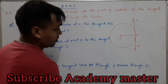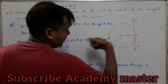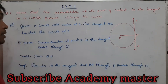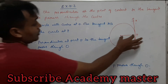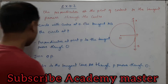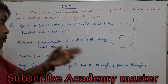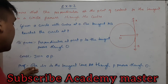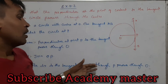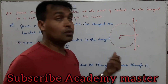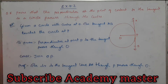We know that a radius, if you extend it, will pass through the center. So we do a small construction: join OP. If we join these two points O and P, that clearly shows the line OP passes through the center. Therefore, OP is perpendicular to tangent AB and passes through point O. That's all there is to this question.